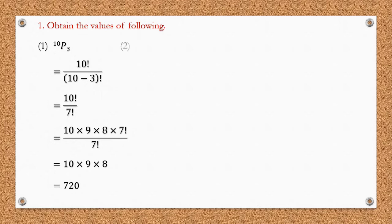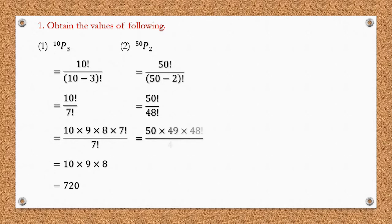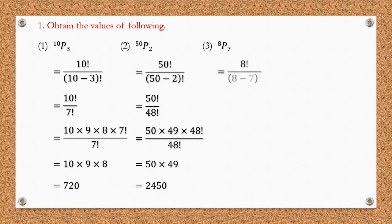The second question is 50P2. It will be 50 factorial upon 50 minus 2 factorial, which is 50 factorial upon 48 factorial. Expanding: 50 × 49 × 48! divided by 48!, giving 50 × 49 = 2450. So 50P2 is 2450. Next we have 8P7. That is 8 factorial upon 8 minus 7 factorial. Since 1 factorial is just 1, this gives us 8 factorial = 8 × 7 × 6 × ... × 1 = 40,320.